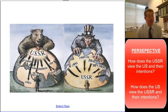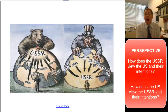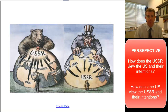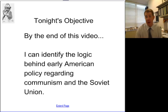Whereas the United States views communism as the real threat to the world. They make some comparisons to what Hitler had done to what Stalin was doing in Eastern Europe after World War II. And so these images are really great for emphasizing a lot of the things that you probably wrote down in the top two columns of your reading notes. My goal for this video is that by the end, you can identify the logic behind early American policy regarding communism and the Soviet Union.